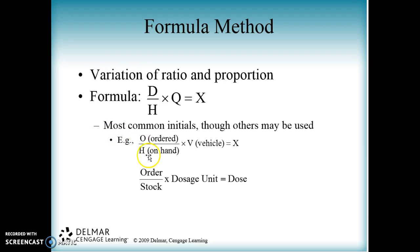They've also given you some other examples. The first one: ordered over on hand times vehicle equals X — that's just another one the book suggested. The last one is my version: order over stock times dosage unit gives you the dose. Dosage unit can mean tablet, so you know how many milligrams are in the tablets. It could be capsules, it could be per five milliliters. Dosage unit is how the stock comes. I'm going to give you an example of how that works with mine, and then I'll leave the rest of the slides for you to review. If you have any questions, just let me know.